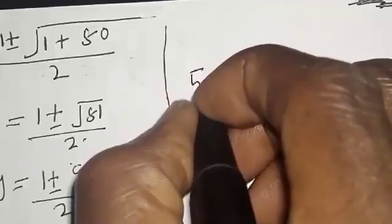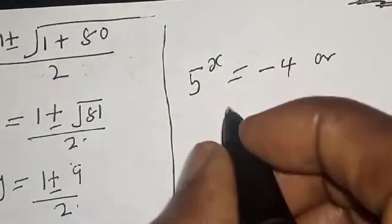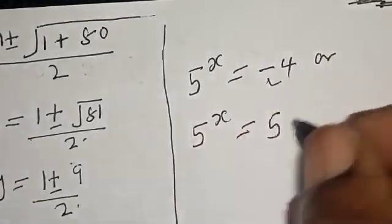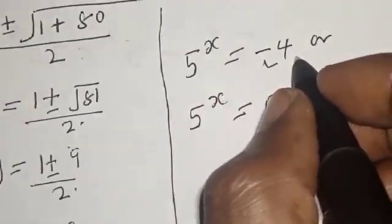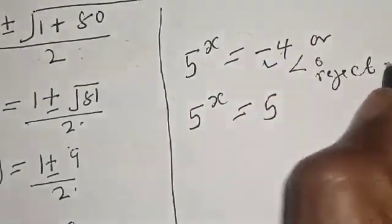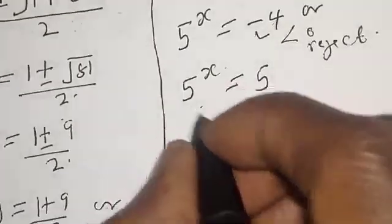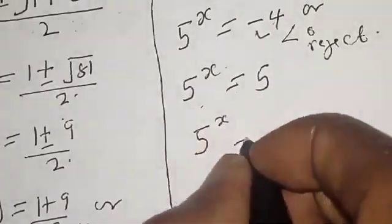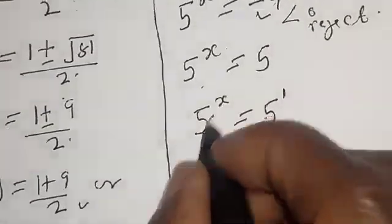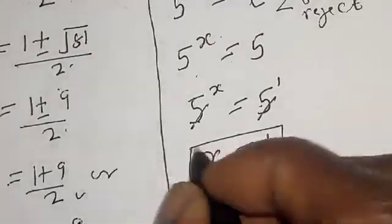Recall that 5 raised to power x equals y. So we have 5 raised to power x equals 5, or 5 raised to power x equals negative 4. Since negative 4 is less than 0, we reject this because 5 raised to power x cannot be negative. The true solution is 5 raised to power x equals 5, which is 5 raised to power 1. Since the bases are the same, x equals 1. That is our final answer.